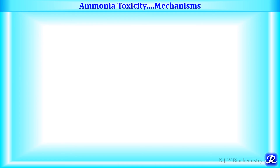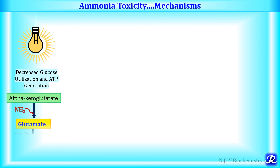Now let's understand the various mechanisms of ammonia toxicity. Ammonia is toxic to the brain and may lead to coma and irreversible brain damage. The first mechanism is decreased glucose utilization and ATP generation. Accumulation of ammonia results in increased synthesis of glutamate, and in this process alpha-ketoglutarate is utilized. This reduces the supply of alpha-ketoglutarate to brain cells — an intermediate of the TCA cycle — and its depleted level results in impairment of the TCA cycle, which adversely affects ATP production. Hence, the toxic effects of ammonia on brain cells are due to reduced availability of ATP.